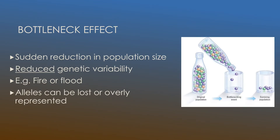The bottleneck effect is a sudden reduction in population size. As you can see in the diagram on the right, we start with an original population, and due to a bottlenecking event such as a natural disaster or excessive predation, the population will decrease dramatically. This leads to reduced genetic variability, which has a devastating effect on how a population is able to breed, reproduce successfully, and maintain any sort of genetic variation between individuals.